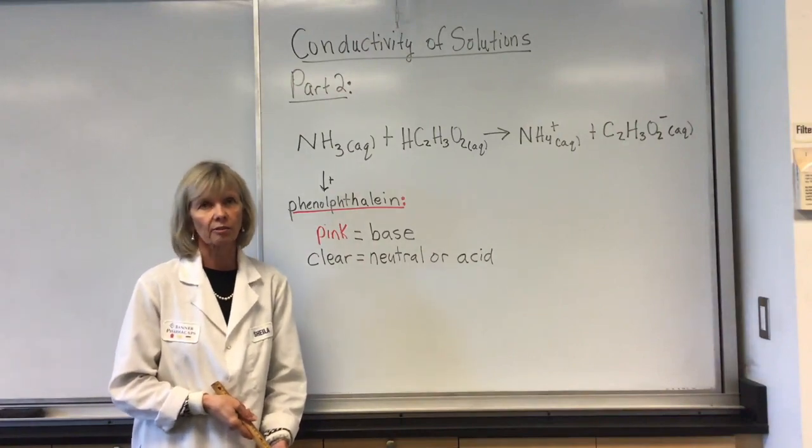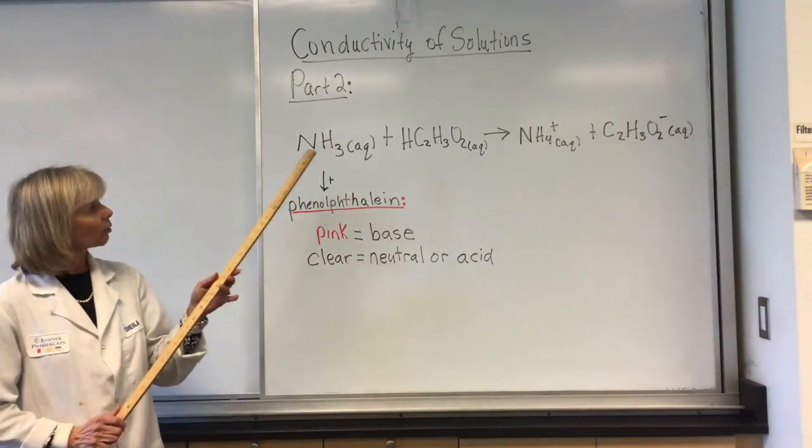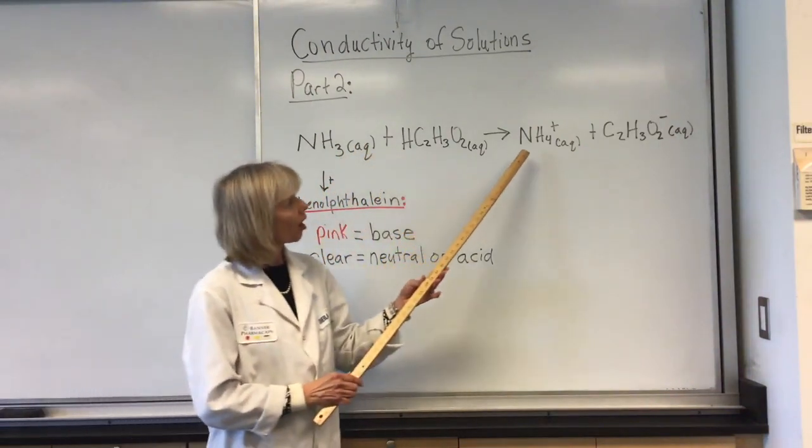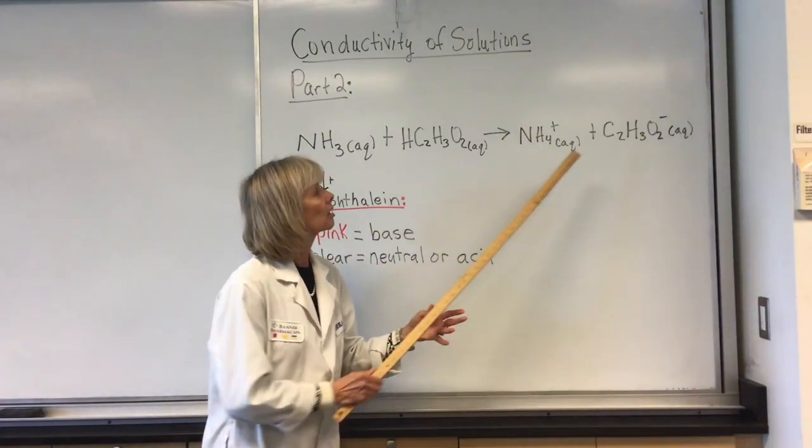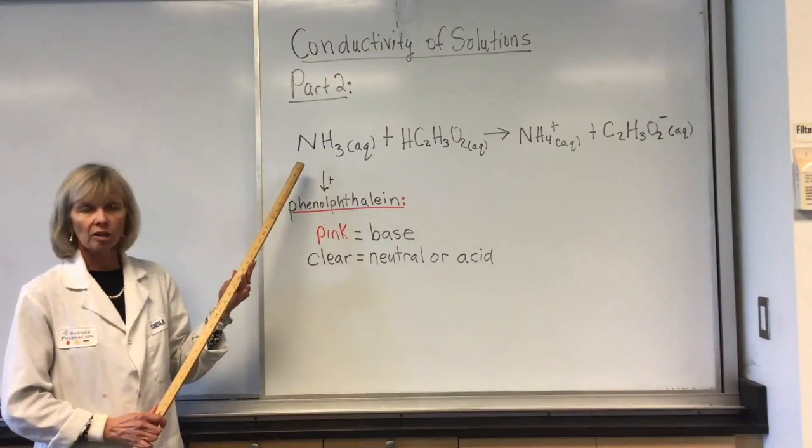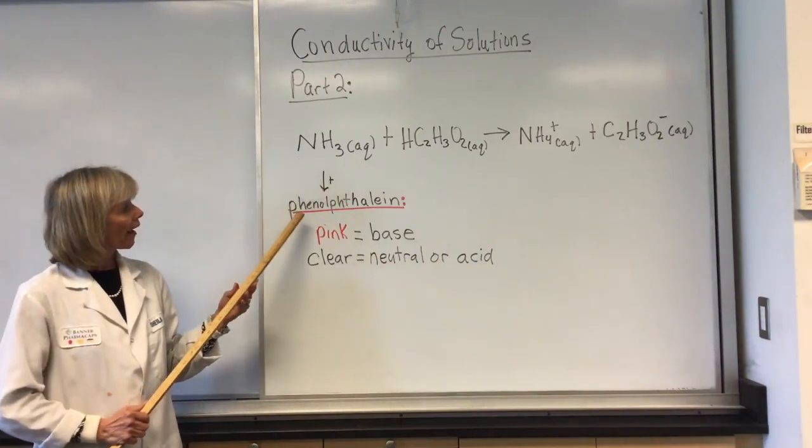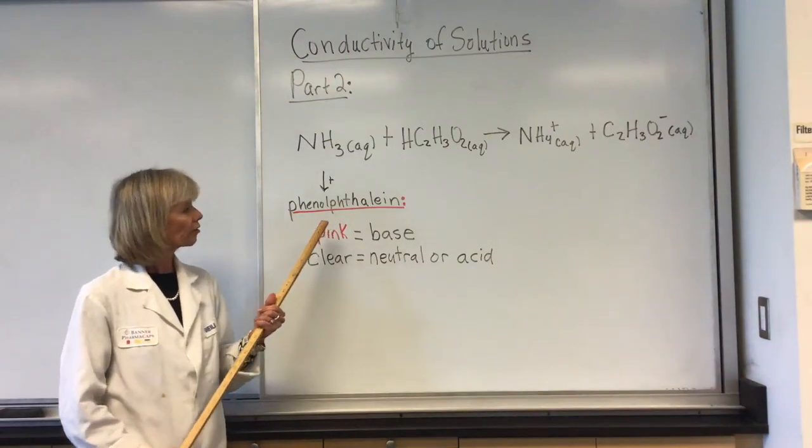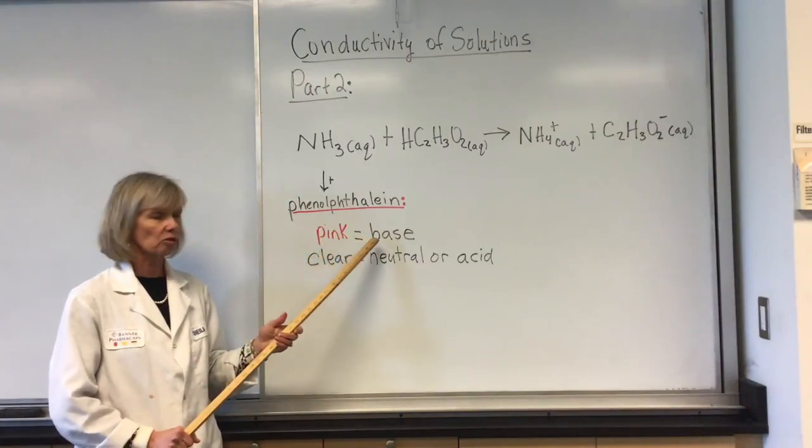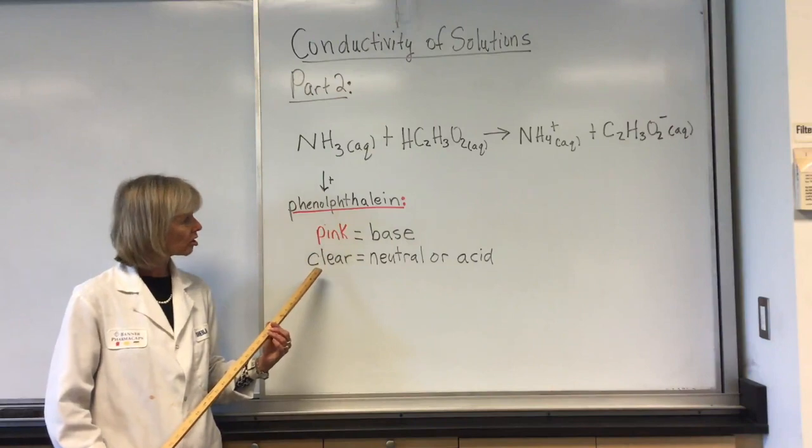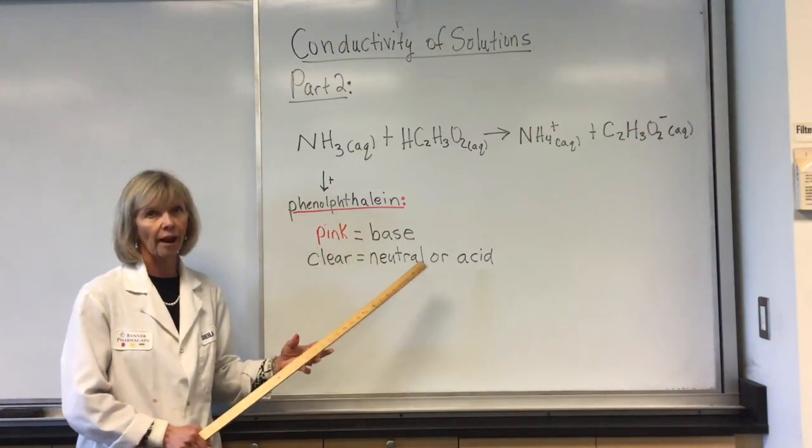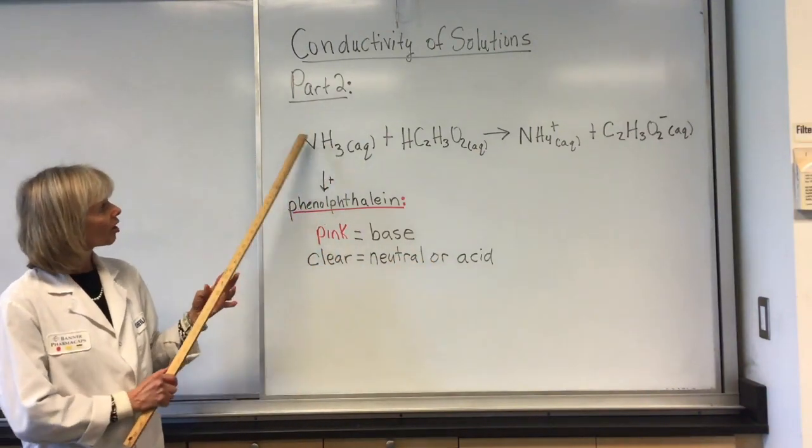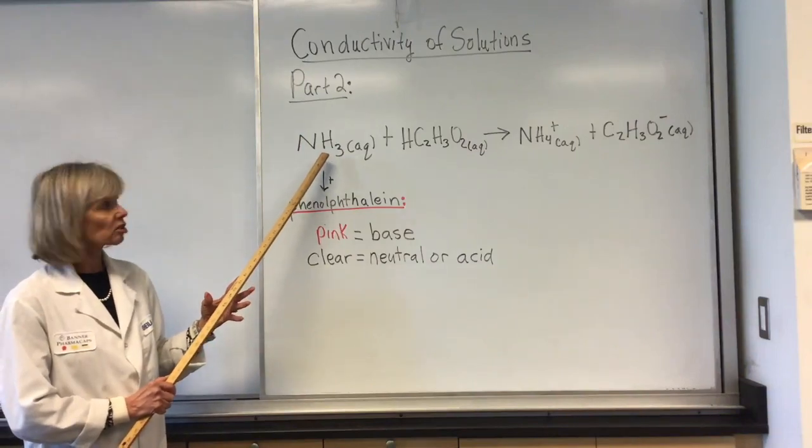For part two of conductivity of solutions, you are going to mix an aqueous solution of ammonia with acetic acid. You're going to form ammonium ions and acetate ions. Before you mix them together, you'll take your aqueous ammonia solution and add phenolphthalein to it. Phenolphthalein is a color indicator to tell you if your solution is an acid or a base. If your solution color turns pink, it means your solution is basic. If your solution is clear, it means your solution is either neutral or acidic. One thing to know when we're doing this portion of the experiment is when we start with ammonia, aqueous ammonia solution, which is a weak base, means that there's very few ions present.